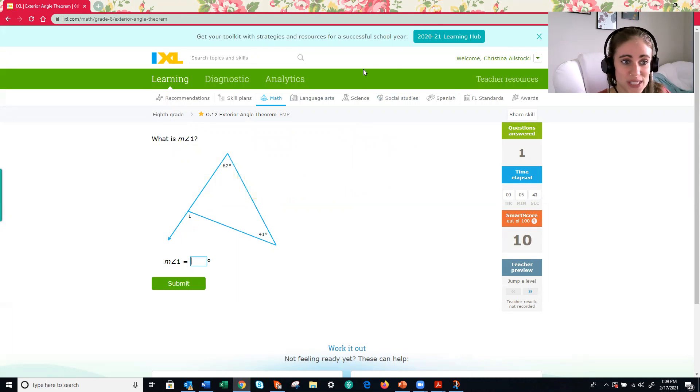All right, let's try this one. So same rule, my exterior angle. So notice that one is on the exterior, it's on the outside of my triangle. The exterior angle is equal to the sum, so addition, of my two interior angles. So in this case, 62 and 41. So once again, we just need to add, what is 62 plus 41? 103. So our missing exterior angle number one is equal to 103 degrees.